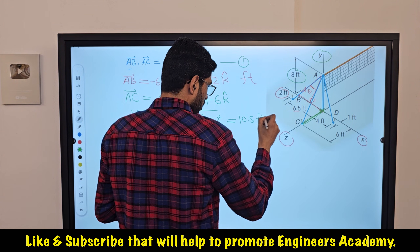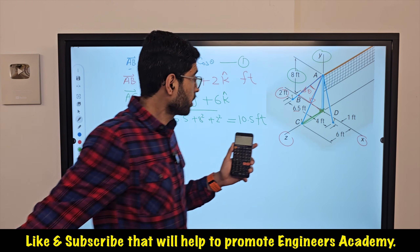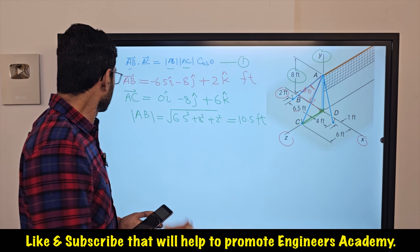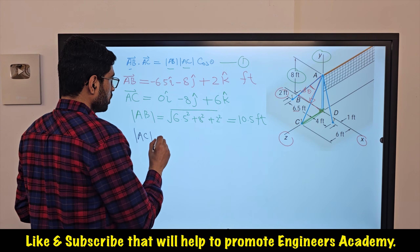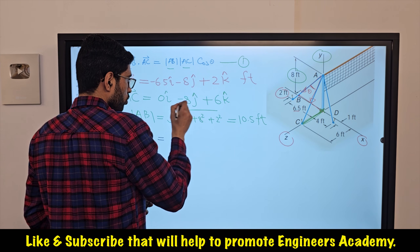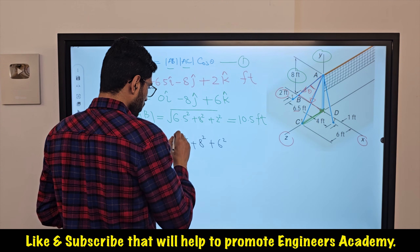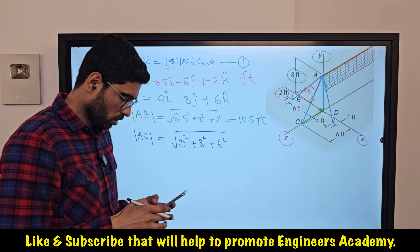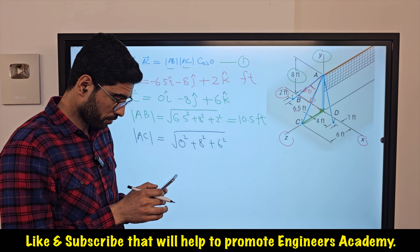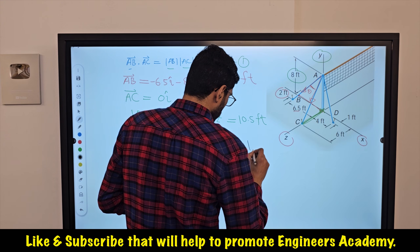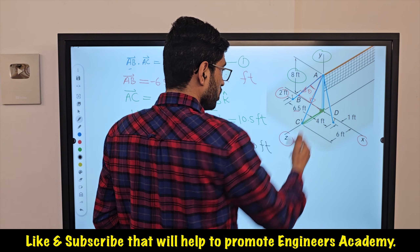Similarly, the magnitude of AC equals the square root of 0² + 8² + 6², which gives us 10 feet. So the direct distance between points A and C is 10 feet.